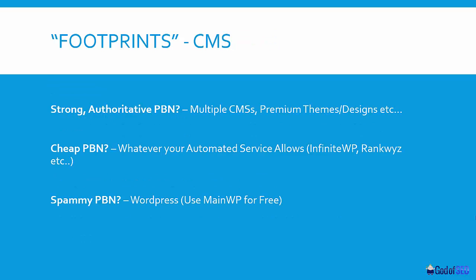Another footprint to consider is CMSs. If you're going with a really strong authoritative PBN, you want multiple CMSs, premium designs, and custom widgets so it looks like a genuine and legit site — as I mentioned with Pompano's network compared to the AngloRank network. For a cheap PBN, go with whatever your service allows: RankWise has about 25 different CMSs, while InfiniteWP is purely WordPress. For a spammy PBN where you want to do it really cheap, just go with WordPress so you can use MainWP for free.